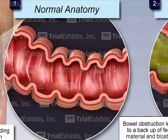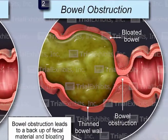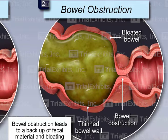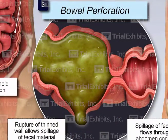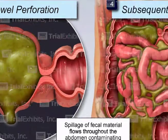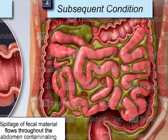We then show how an obstruction of the bowel leads to a backup of fecal material in the proximal portion of the colon, leading to a thinning of the bowel wall. This thinned wall forms the perforation, as the fecal material is allowed to escape. Finally, we show how this fecal material spreads throughout the abdomen, leading to a massive infection.